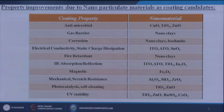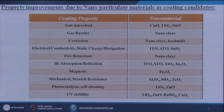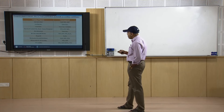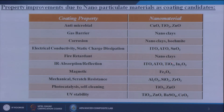If we want to increase the gas barrier properties we can use several types of nano clays — clays in nano form. To improve corrosion resistance we can use different nano clays or boehmite. For electrical conductivity and static charge dissipation we can use indium tin oxide, antimony-doped tin oxide, or tin oxide. For fire retardant materials we can use nano clay nanoparticles. For IR absorption and reflection we can use ITO, ATO, TiO2, or indium oxide. For magnetic properties we can use Fe2O3, and for mechanical scratch resistance we can use Al2O3, SiO2, or zirconia oxide.